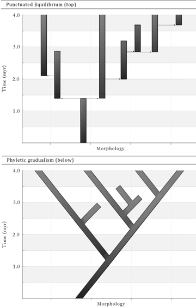Punctuated equilibrium is a theory in evolutionary biology which proposes that once species appear in the fossil record, the population will become stable, showing little evolutionary change for most of its geological history. This state of little or no morphological change is called stasis. When significant evolutionary change occurs, the theory proposes that it is generally restricted to rare and geologically rapid events of branching speciation called cladogenesis.